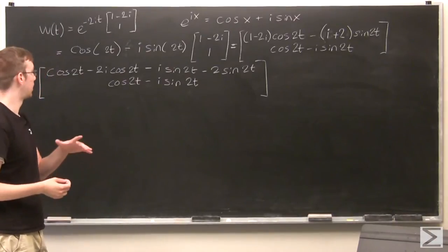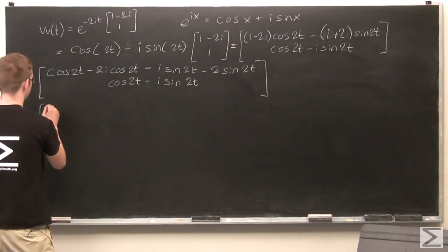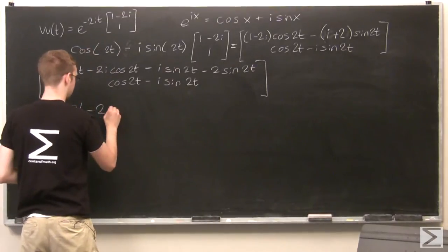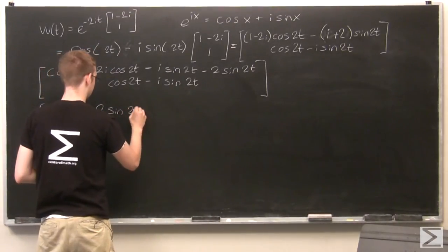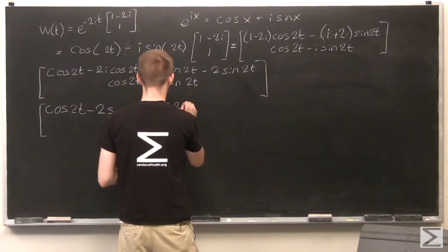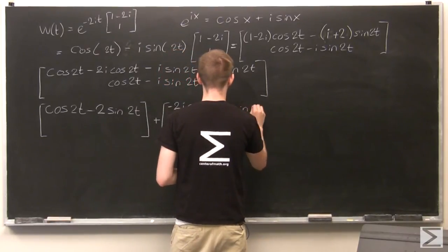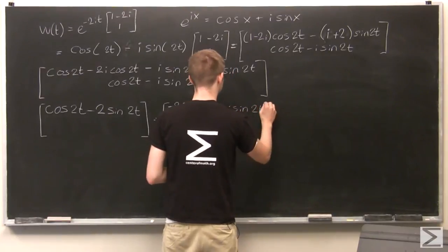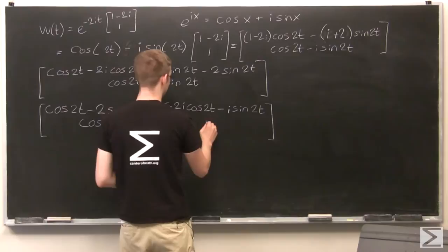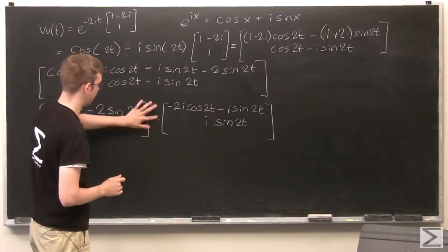All right, now I want to separate my real values from my imaginary values. So I'm going to have two parts to this. I'm going to have cosine(2t), skip that one, skip that one, and -2*sine(2t). Plus, this one that I skipped, -2i*cosine(2t), and -i*sine(2t). And on my bottom is cosine(2t) and -i*sine(2t).